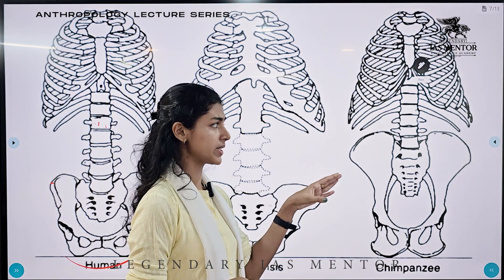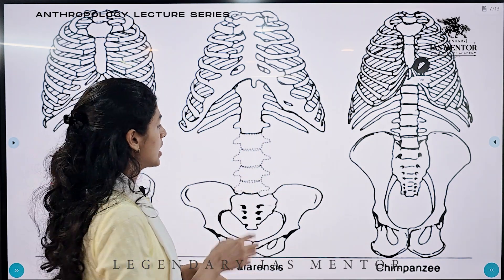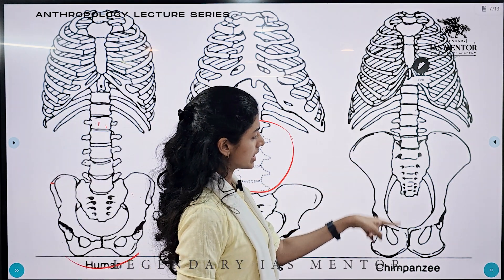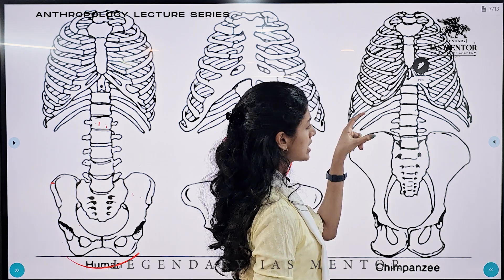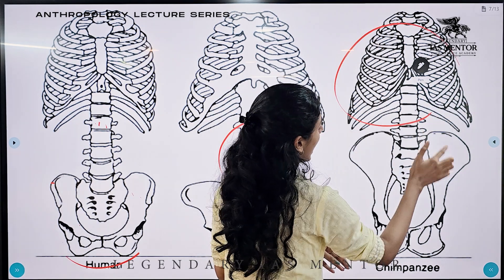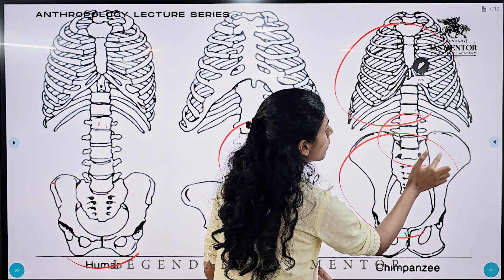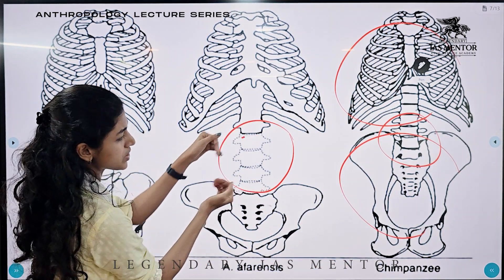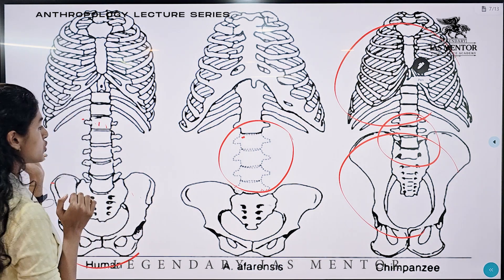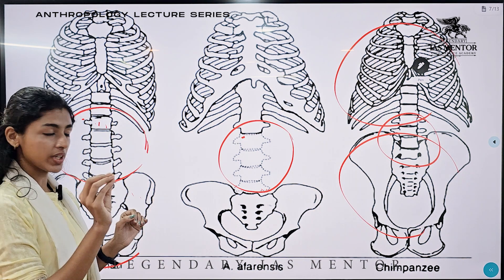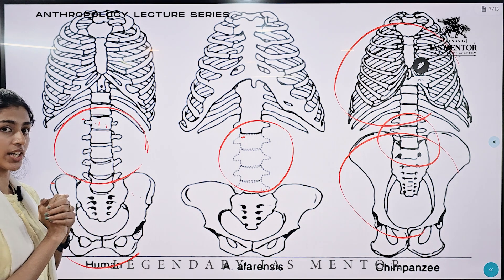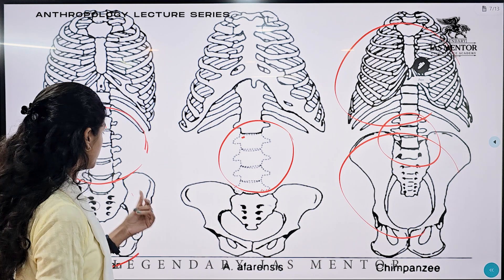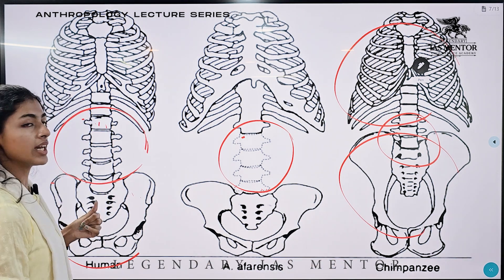Another difference is in the lumbar region, which is part of our spinal cord. In chimpanzees, the lumbar region is sandwiched between the thoracic region and the pelvic region, so movement is restricted. Whereas in Australopithecus afarensis and in humans, the lumbar region is freed. Because of this free position of the lumbar region, we can walk and travel longer distances.